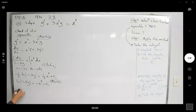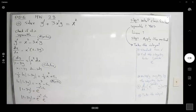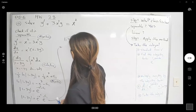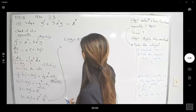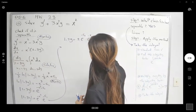Now the absolute value of 1 minus 3y equals e to the power negative x cubed minus c₁. We can split the exponent: absolute value of 1 minus 3y equals e to the power negative x cubed times e to the power negative c₁. Since we have an absolute value, 1 minus 3y equals plus or minus e to the power negative c₁ times e to the power negative x cubed.